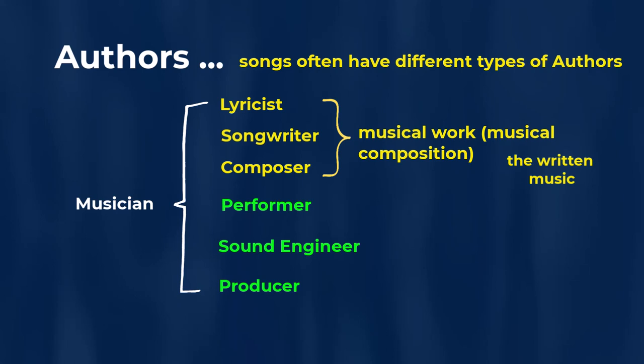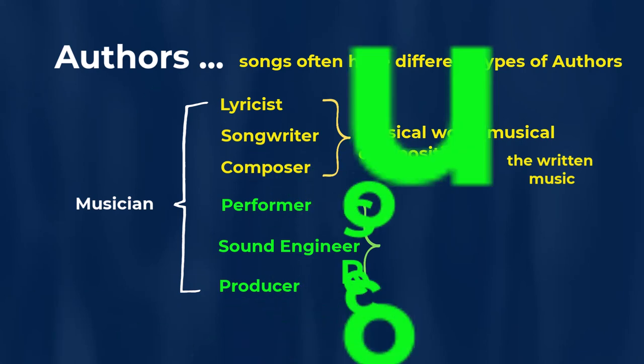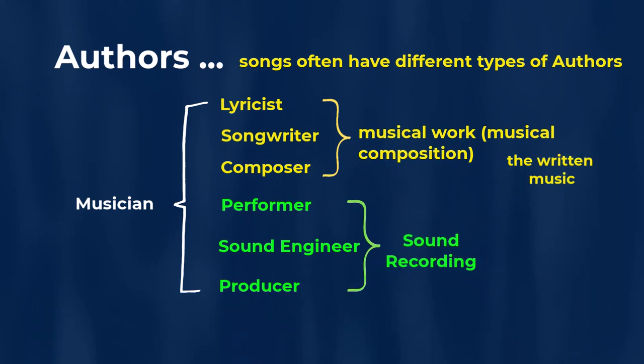Whereas the performer, the sound engineer, and the producer generally all contribute to the sound recording. So the musical work or the musical composition is generally referred to as one type of copyright that music or a song can have, and a sound recording is generally the other type of copyright that a song or music can have.